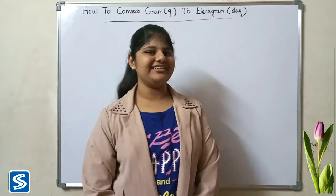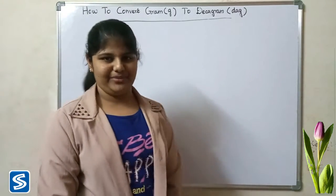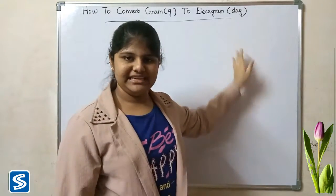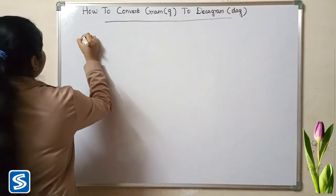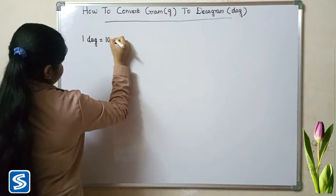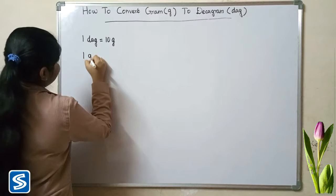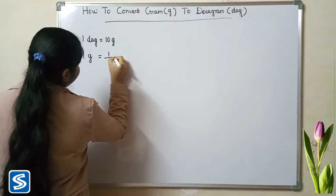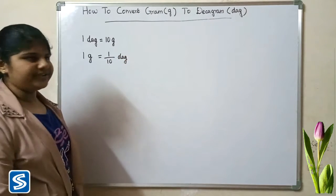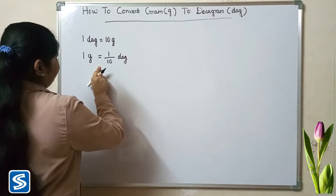Hi friends, welcome to Saumush channel. In this video I am going to teach how to convert gram into decagram. The short form of gram is g, the short form of decagram is dag. We already know that 1 decagram is equal to 10 grams, so 1 gram is equal to 1 by 10 decagram. To convert gram into decagram we use the formula: 1 gram is equal to 1 by 10 decagrams.